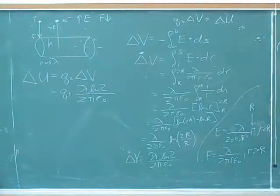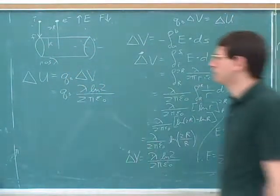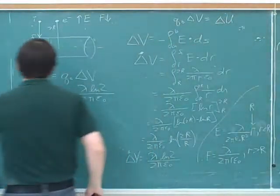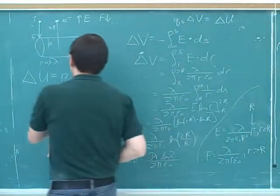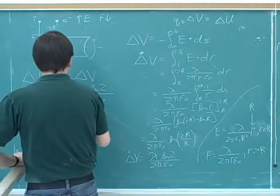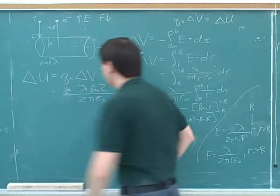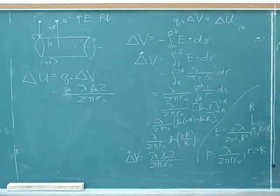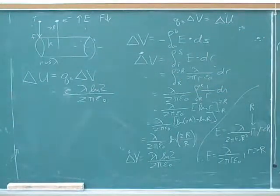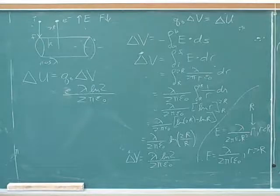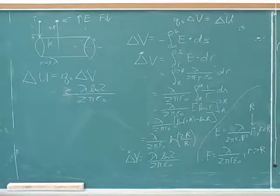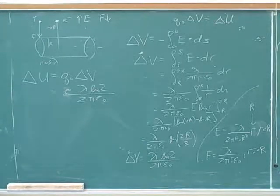What are we going to plug in for q naught? The electron — because our test charge here is the electron, and the charge of the electron is e. So then, we could do the conservation of energy equation.